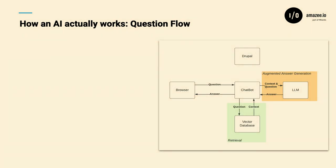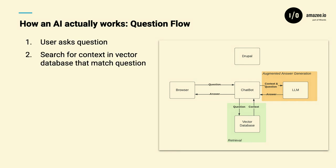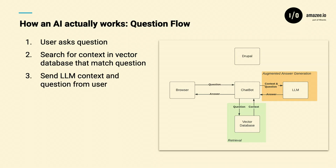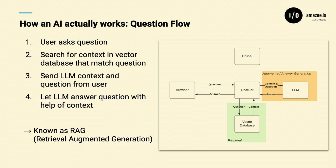Now we get into the question flow — what happens when a user asks a question to our AI now that we have this vector database. We ask the question, the chatbot goes to the vector database with our question, and finds content that has a similar semantic meaning. When we ask 'I'm hungry for some Italian food,' it goes to the vector database and tries to find all the chunks stored there that might relate to Italian recipes. From there, we stuff that back into the context and send it to the LLM for the final response. This process, you'll see a lot if you get involved with this — it's known as RAG: Retrieval Augmented Generation.